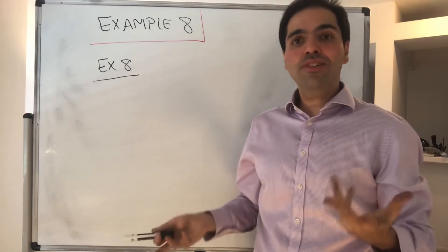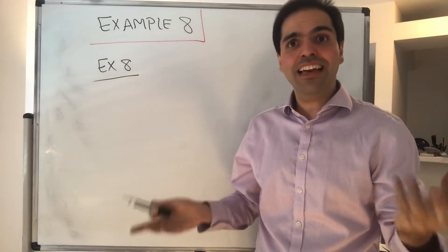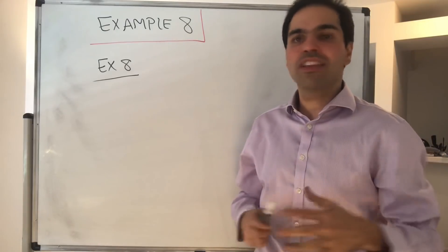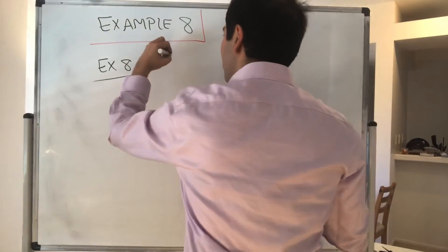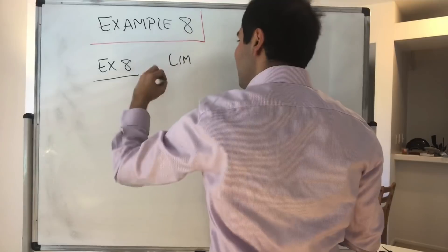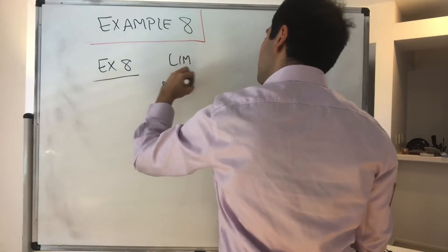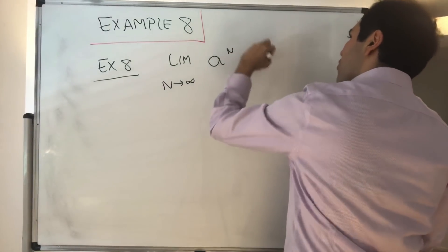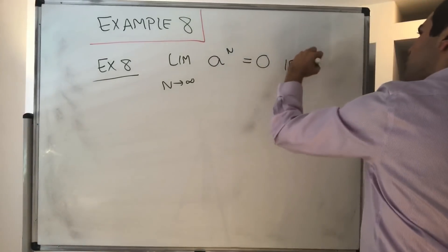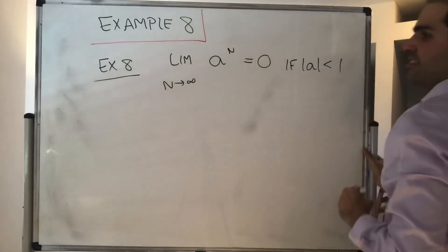All right, thanks for watching. And today we'll show a very elegant, yet classical result in analysis. Namely, we'll show that if a is less than one in absolute value, then the limit of a to the n is always zero. So the absolute value of a is less than one.